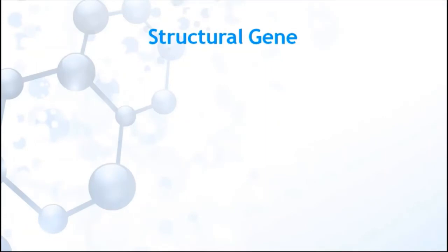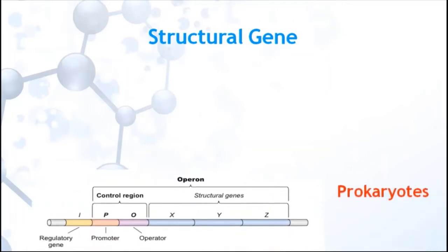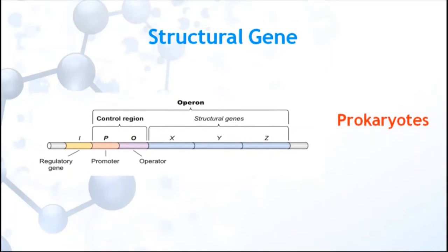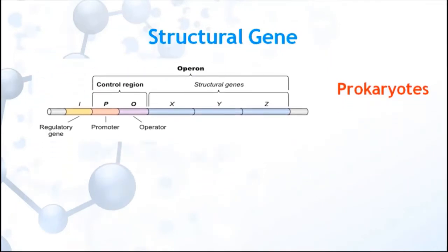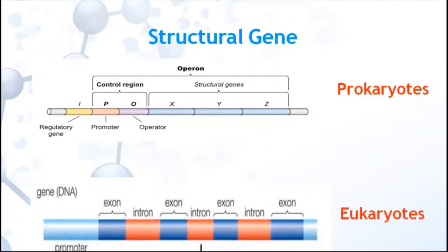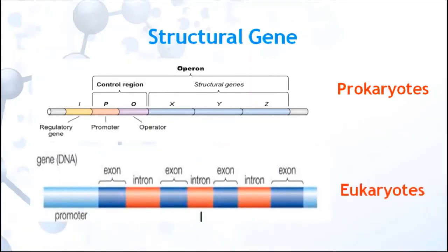A structural gene is a gene that codes for any RNA or protein product. In prokaryotes, structural genes of related function are located adjacent to one another forming an operon. In eukaryotes, structural genes are composed of coding exons and non-coding introns.